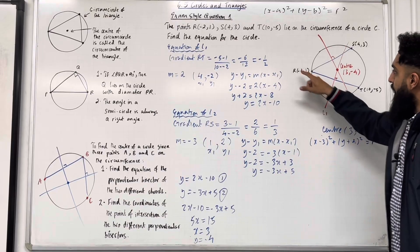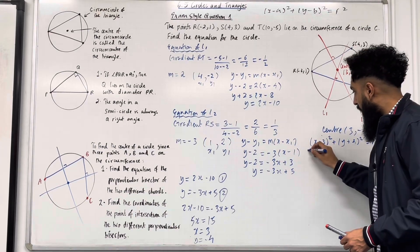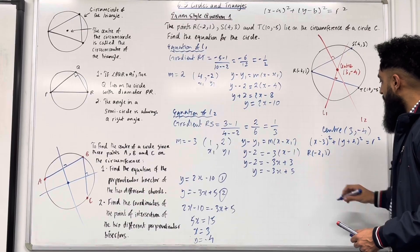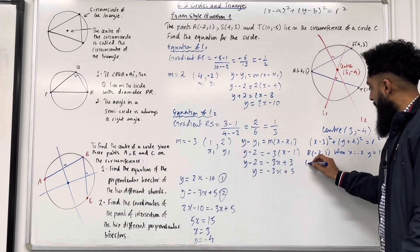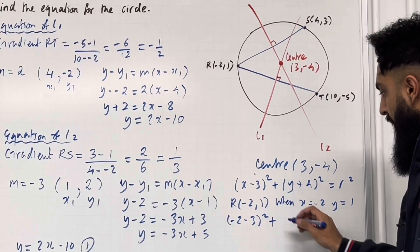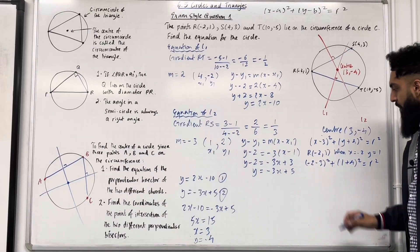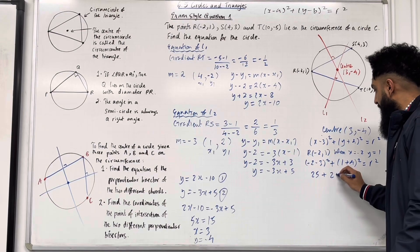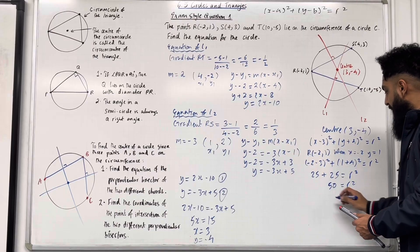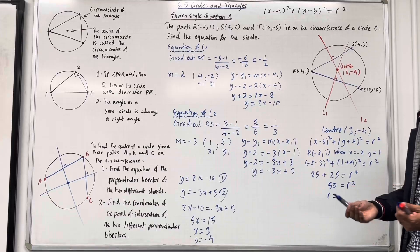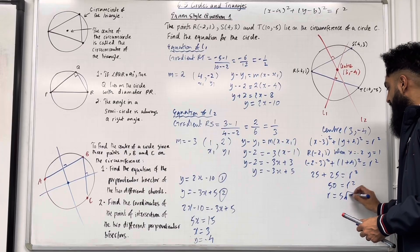I'll take the coordinate for R, which is (−2, 1), and substitute into the equation. So (−2 − 3)² + (1 + 4)² = r². That gives 25 + 25 = r², so r² = 50, and r = √50 = 5√2. Remember, r is the radius — it is a length, and a length is always positive, so we take the positive square root.